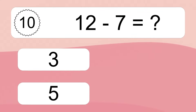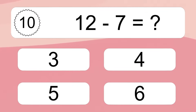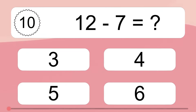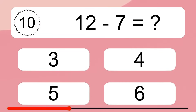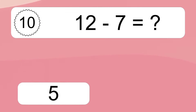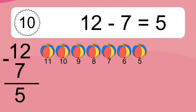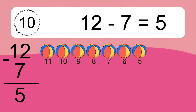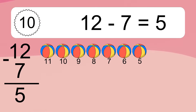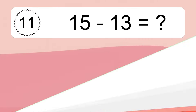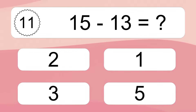12 minus 7 equals what? 12 minus 7 equals 5. Let's count it. 11, 10, 9, 8, 7, 6, 5.